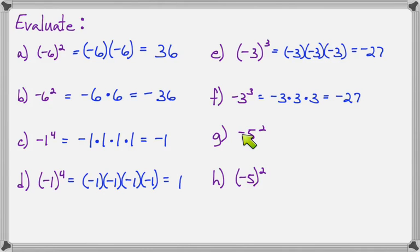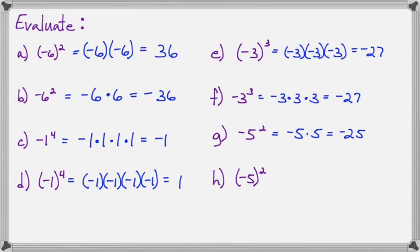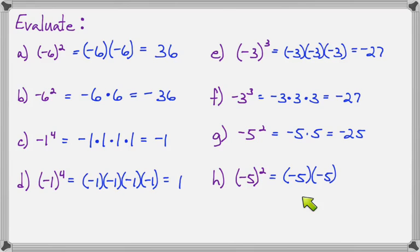On part G, there are no parentheses, so 5 is the base and the negative is just sitting in front. So negative 5 times 5 is negative 25. On part H, we do have parentheses, so negative 5 is the base. We put down negative 5 times negative 5, and that equals 25. You can see the difference that the parentheses makes on the ones where we have even exponents.